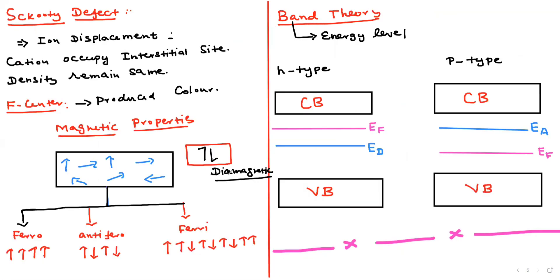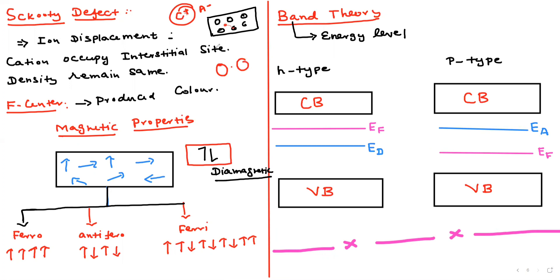The Frenkel defect involves cation displacement: the cation leaves its lattice site and occupies an interstitial position. Since cations are smaller in size, they can fit into interstitial positions. Density remains the same in a Frenkel defect because the atom just moves to an interstitial site, and the crystal remains neutral. The F-center (color center) is a color-producing center that leads to conductivity.